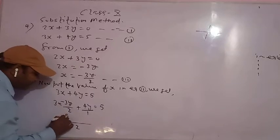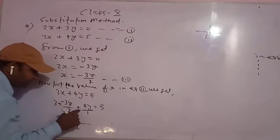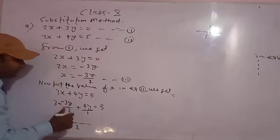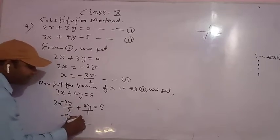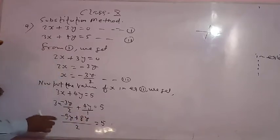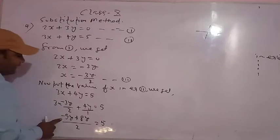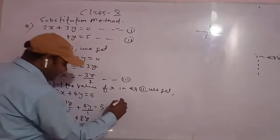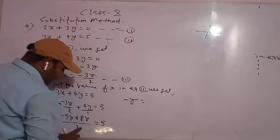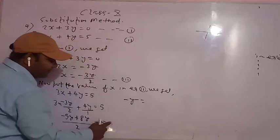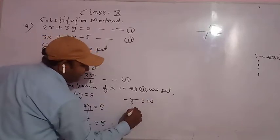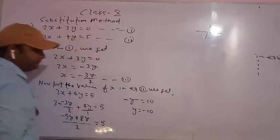3 times minus 3y gives minus 9y, and 1 will cancel 2, giving 2 times 4y equals 8y. Minus 9y plus 8y gives minus y. And 2 has to come to the right side: 2 times 5 is 10. It means y is equal to minus 10.